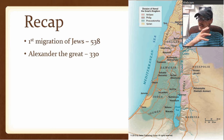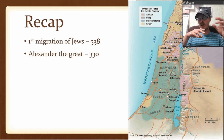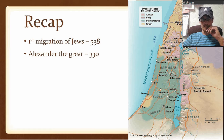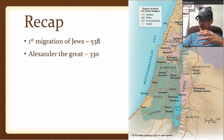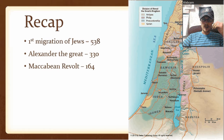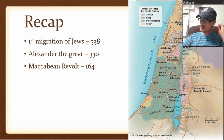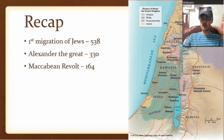Alexander the Great comes by and takes over, beats Persia and everything. This is in the 330s that he makes it over here. But right after conquering everything, he dies, and his empire is broken up between his generals — nothing really important for our study.